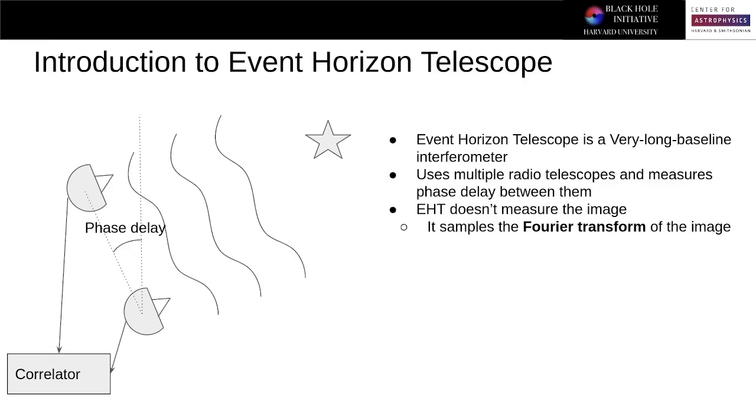So what is the Event Horizon Telescope? The Event Horizon Telescope is a very long baseline interferometer, and what this means is that it's not a single telescope, but rather multiple radio telescopes spread across the Earth. These telescopes are then linked together and correlated in such a way that they don't actually measure the on-sky image, rather the Fourier transform of the image.